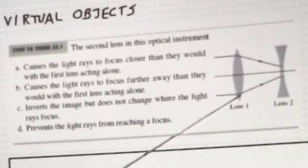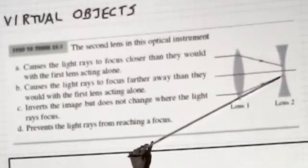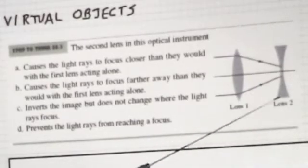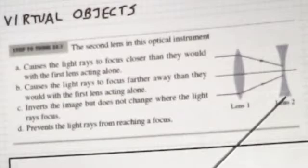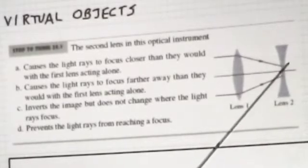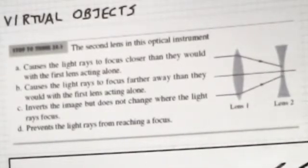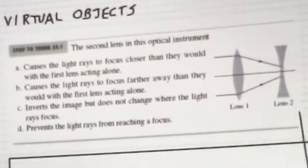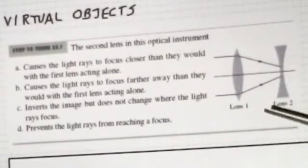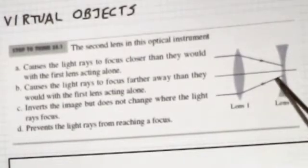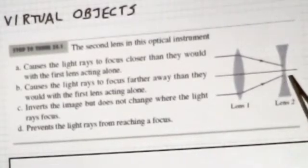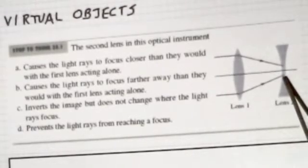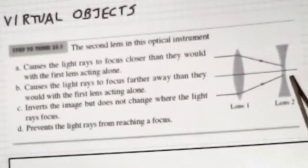So what's going to happen to a light ray that is coming in like this and hits this lens? Does it get deflected towards the center of the diverging lens or away from it? It should be away. So that light ray is going to change direction. Instead of going this way, it's going to be bent a little bit this way. It's going to move away from the optical axis.